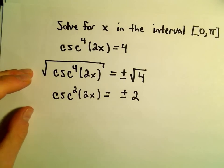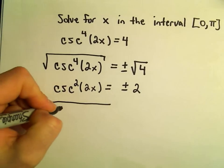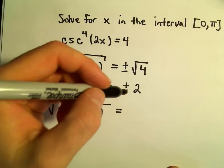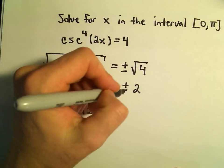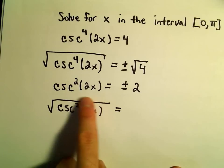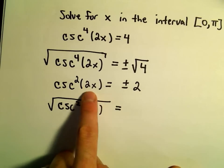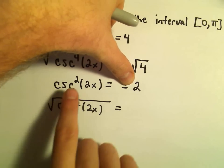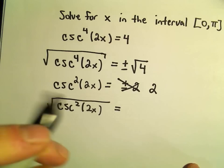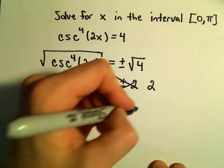I'm going to do this one more time, because now we can get rid of the fact that it's being squared by taking yet another square root. Notice that cosecant squared of 2x equals negative 2 would have no solutions — you can't square something and get a negative. So really the only equation that would have solutions is cosecant squared of 2x equals positive 2.